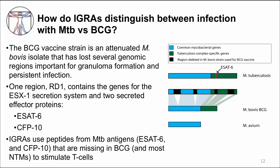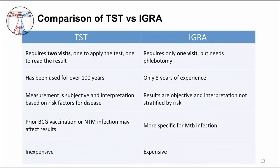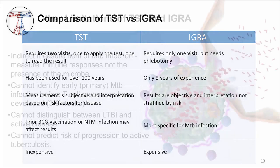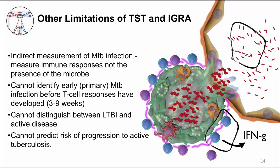There are some differences between TST and IGRA, and the table shows you advantages and disadvantages of each. One test is not necessarily better than the other. There are also limitations of both TST and IGRA. These tests are an indirect measurement of MTB infection — they measure the immune response, not the presence of the microbe. They cannot identify early or primary MTB infection before T cell responses have been activated, which takes about three to nine weeks. They cannot distinguish between latent TB infection and active TB disease, and they cannot predict risk of progression to TB disease.